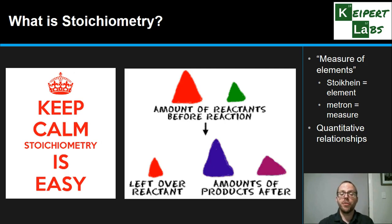And it also allows us to make predictions. So it helps us to say, all right, well if I start with 10 grams of this reactant and 15 grams of this reactant, how much of this product should I get? What yield might I have, for example?